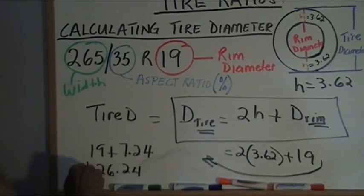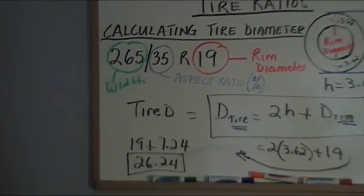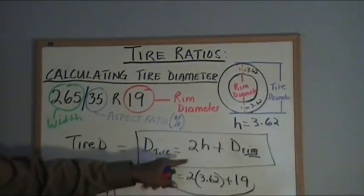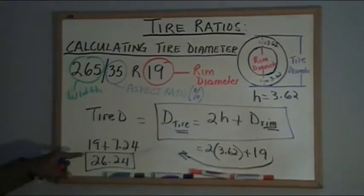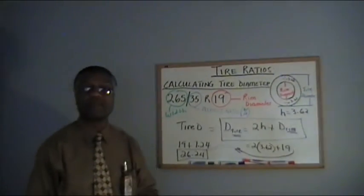So my tire diameter is gonna be 26.24. Just to recap, two heights plus the rim diameter gives me my tire diameter of 26.24.